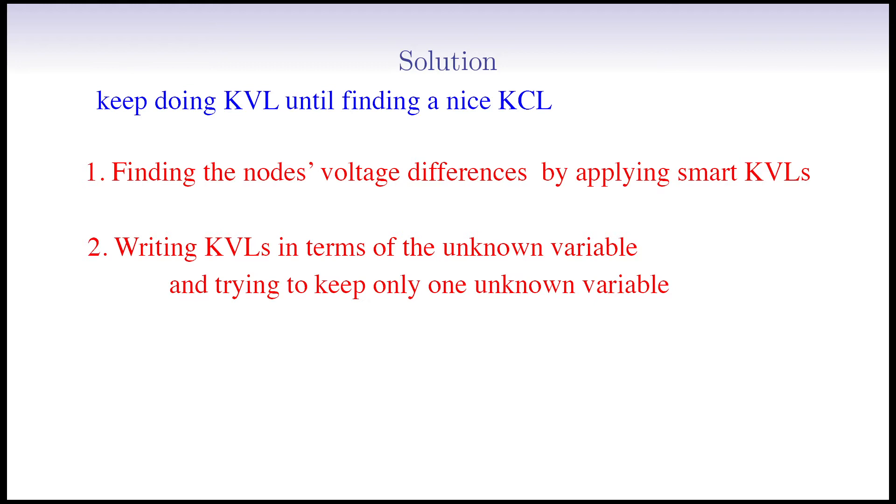And finally, after playing with KVL, once we found a nice node that the incoming and outgoing currents are in terms of the unknown variable, we apply KCL to find the unknown. Very good. We now walk through the given circuit and find the unknown voltage with this approach.